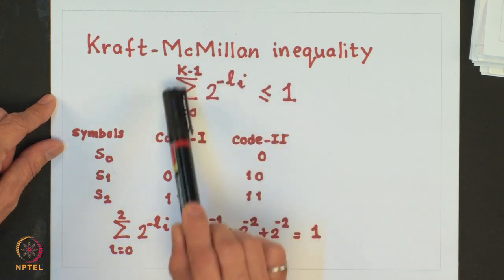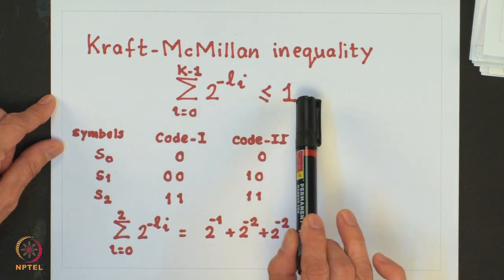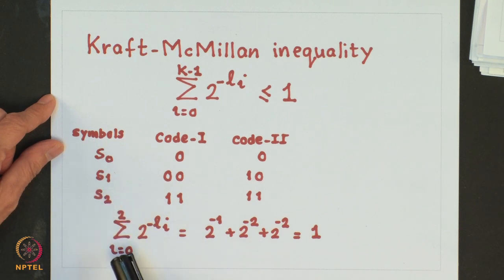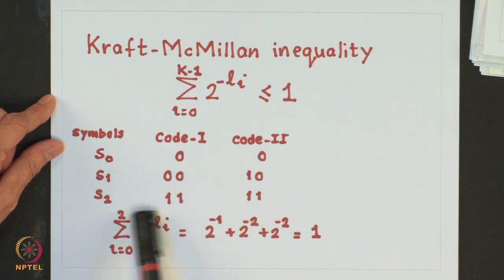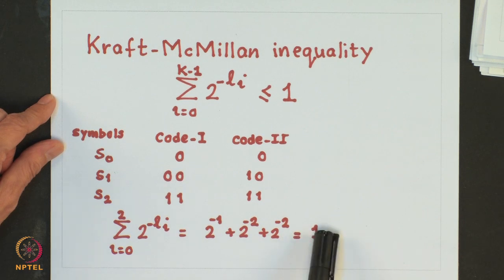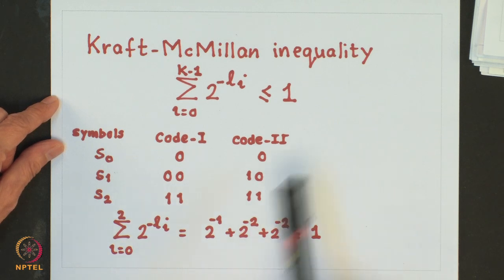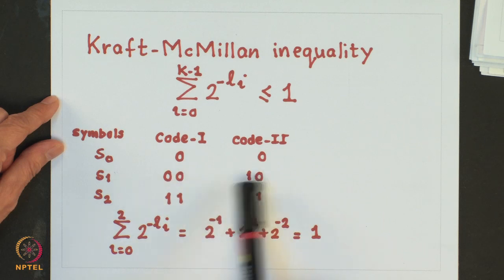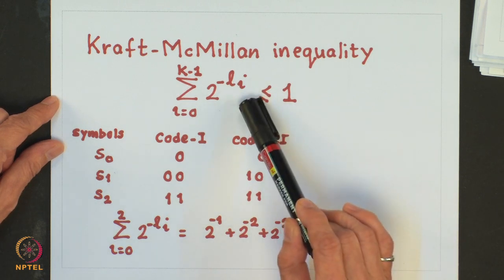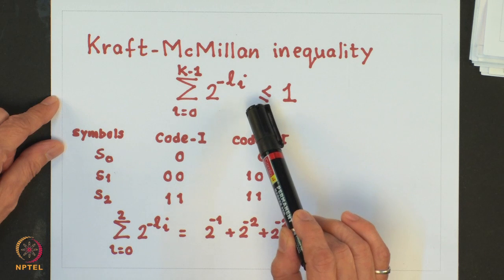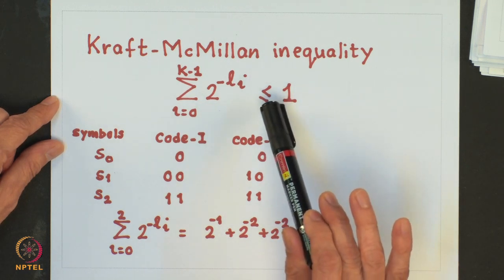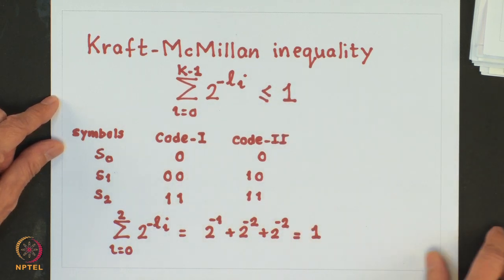It is important to stress that this inequality is on the length of the code. Let us take a source with 3 symbols and 2 codes as shown here. Both these codes satisfy the length condition — if I evaluate this I get it equal to 1, so this condition is satisfied. But we know that code 1 is unacceptable whereas code 2 is acceptable for the same lengths of the code words. So this condition only tells you that a code exists, but does not specify the procedure to design such codes.